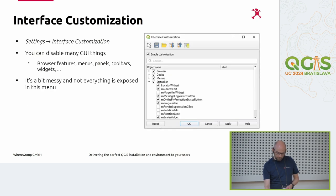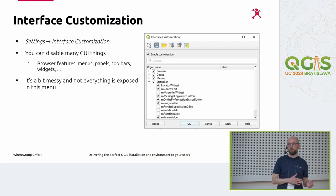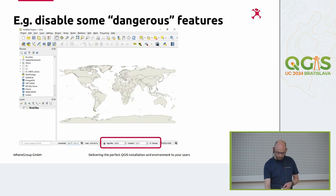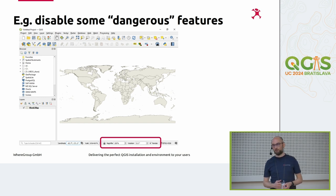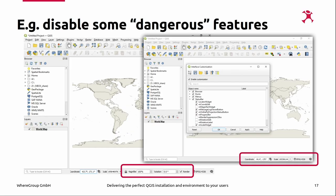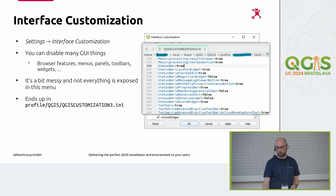The other .ini file is for interface customization. You already know you can enable and disable panels or toolbars in QGIS, but you can also really disable them - make them unreachable for users. It's not just about showing or hiding them; you can remove the functionality that displays them at all. For example, you could take out those confusing options at the bottom of the map - the ones that cause people to say 'my map looks weird.' You could go into this menu, change some settings, and they're gone. This is also stored in a text file that you could pre-configure and put in a profile to keep your users safe from confusion.